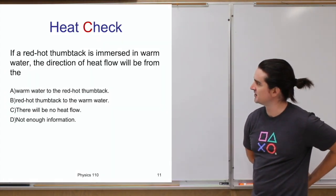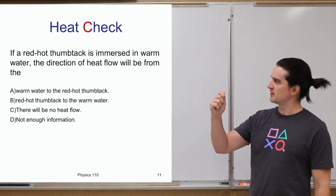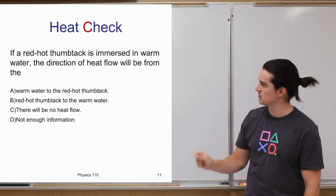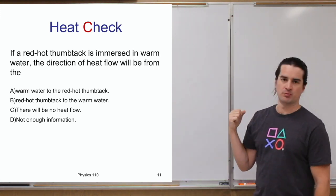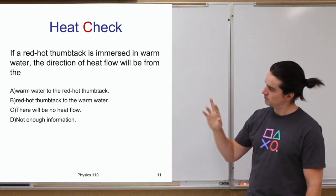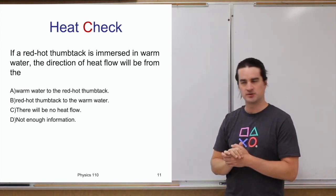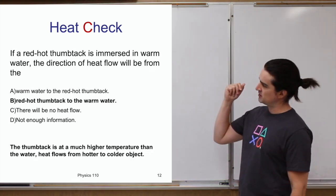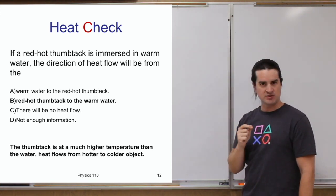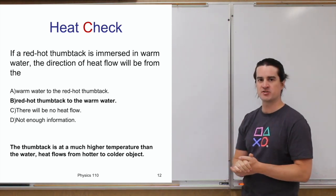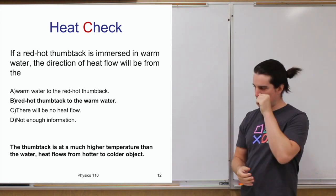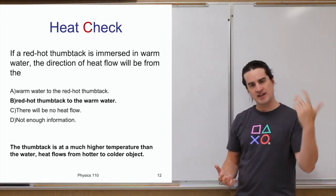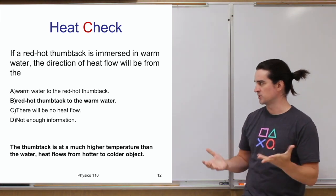As a heat check: say you have a red-hot thumbtack — somehow put in a fire, it got red-hot. You grab it with tongs and immerse it in a cup of warm water. What direction will the heat flow? Hopefully you said heat is going to flow from the red-hot thumbtack to the warm water. It has nothing to do with how much material there is — there might be way more warm water than thumbtack volume-wise. The fact that the thumbtack is at a much higher temperature means heat will naturally flow from the thumbtack into the water until they reach the same temperature.